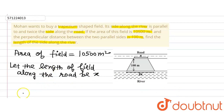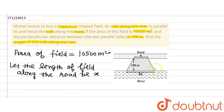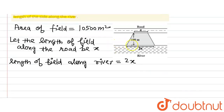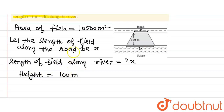We have taken the length along the road to be x, and then according to the question, the length of the field along the river will be 2x. We are also given the distance between the two parallel sides, which is the height of the trapezium. So height is equal to 100 meters. We now have both parallel sides x and 2x, height 100 meters, and area 10,500 square meters.